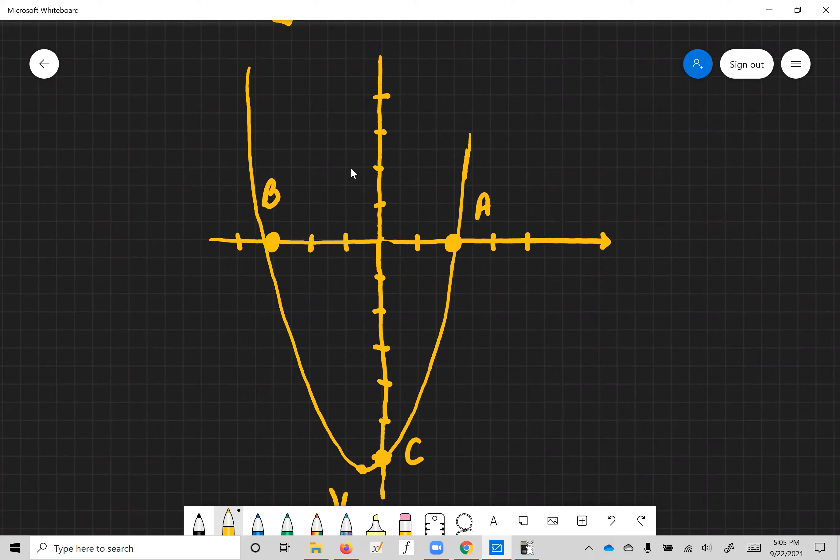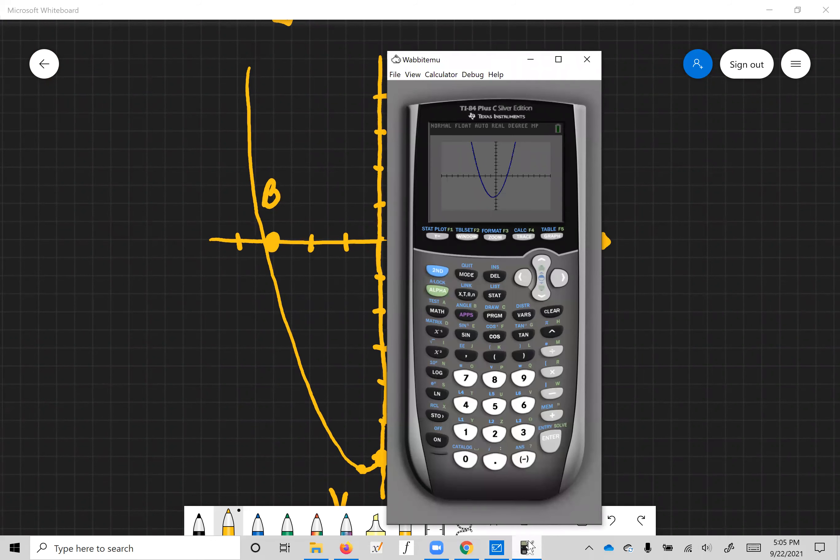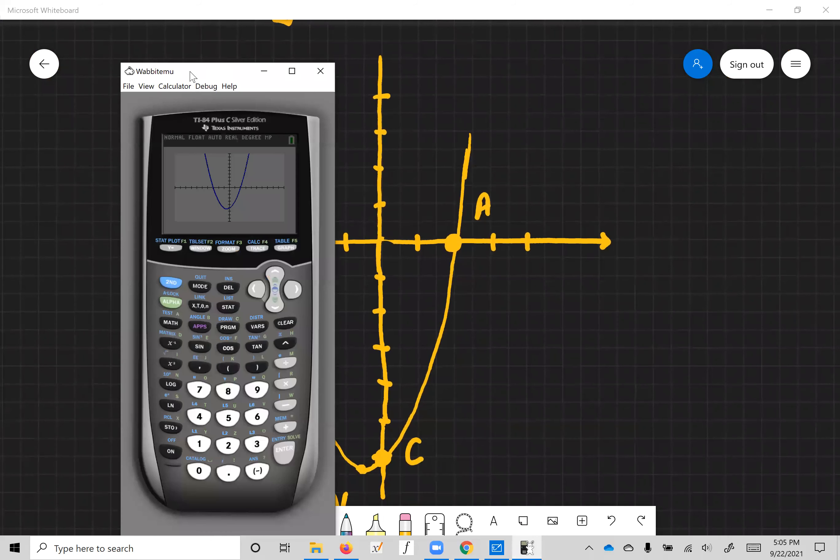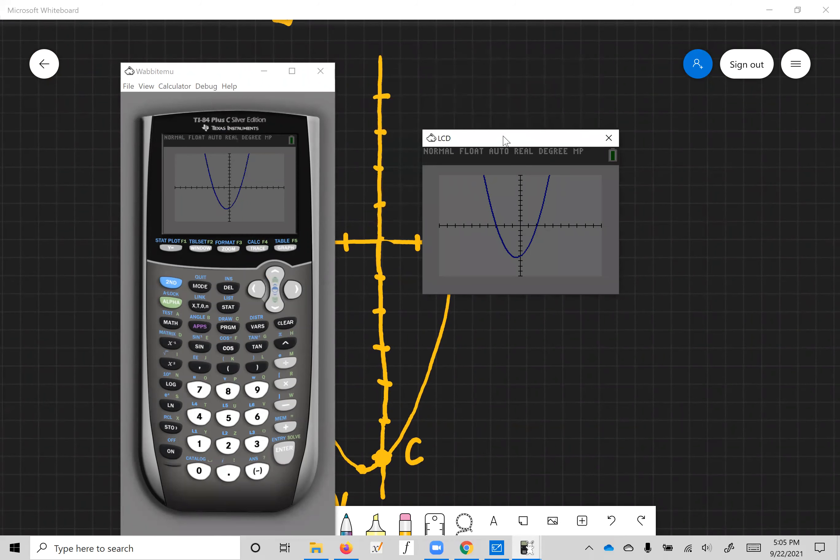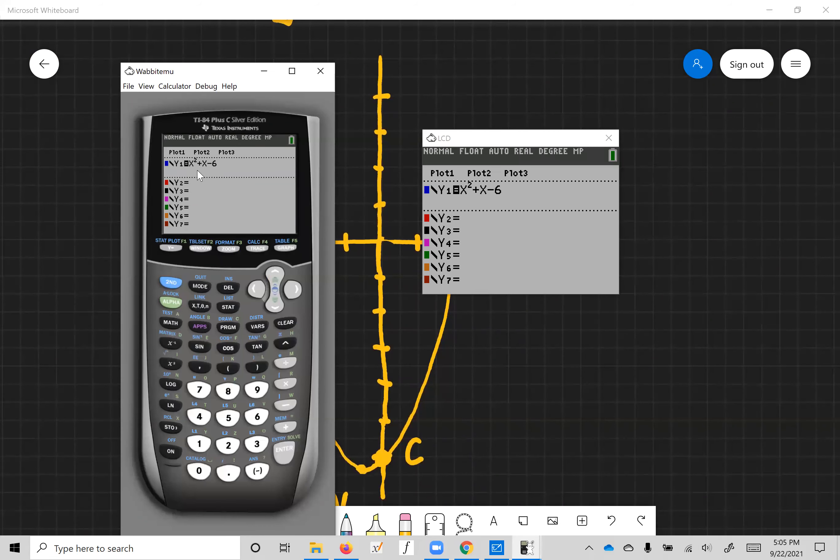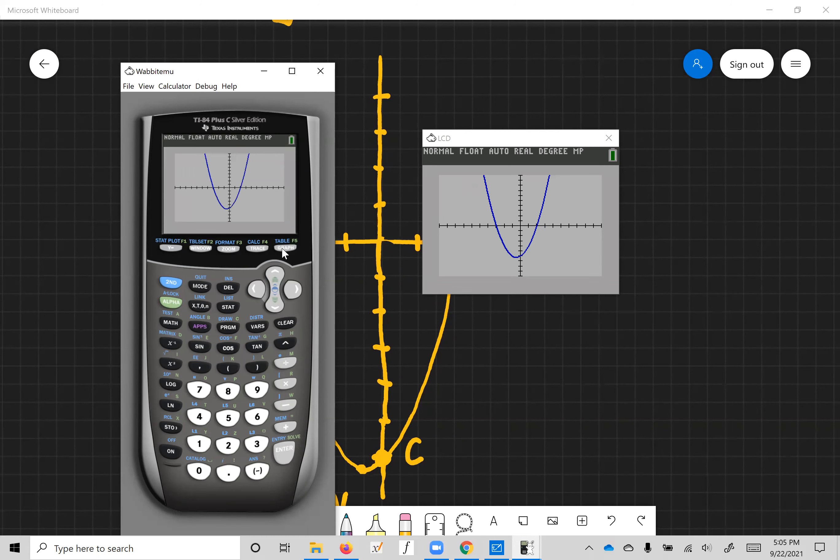Now I use the TI-83/84. Let's view the LCD screen. There it is. So again, I plug the equation in here, y equals x squared plus x minus 6, and then I hit graph and there it is.